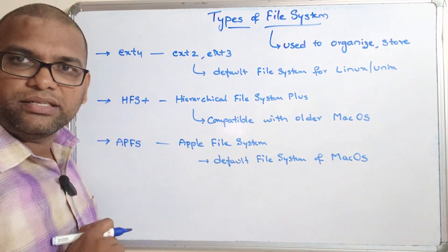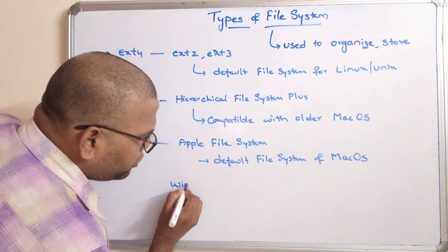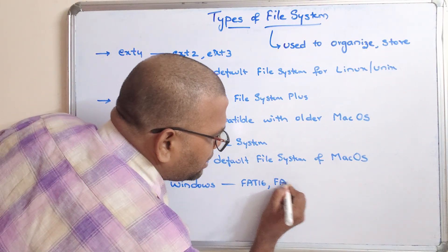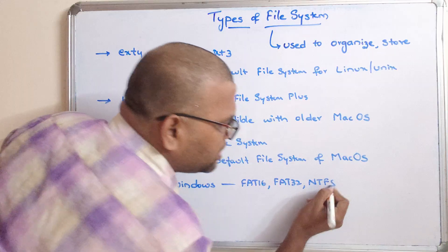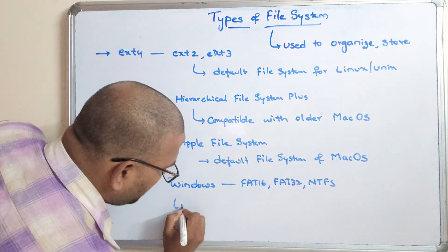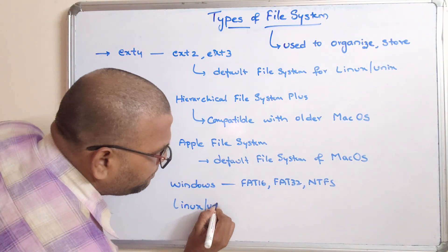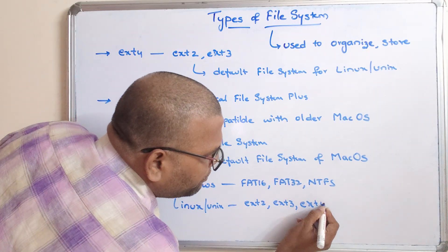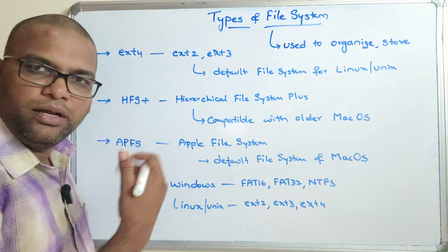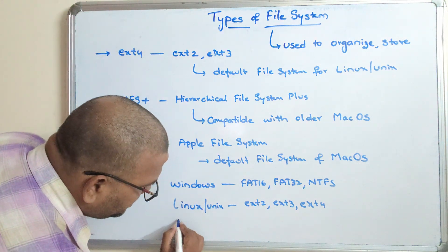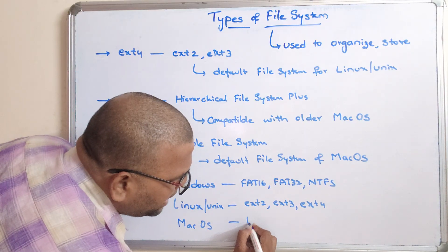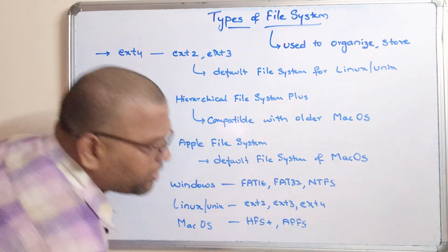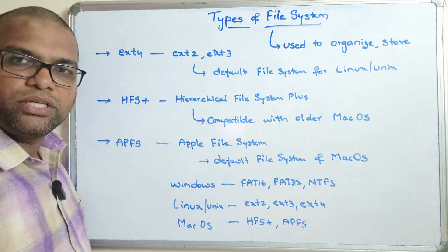So these are all the different types of file systems. For Windows, the supported file systems are FAT16, FAT32, and NTFS. For Linux or Unix, the file systems are EXT2, EXT3, and EXT4. For Mac OS, the supported file systems are HFS Plus — Hierarchical File System Plus — and APFS. These are the file systems that support their respective operating systems.